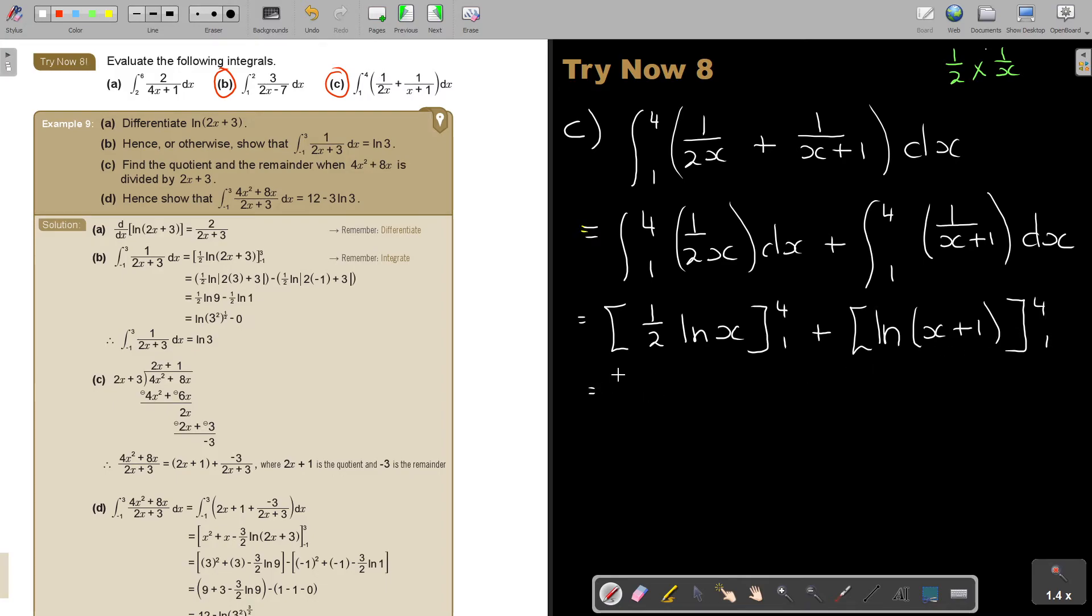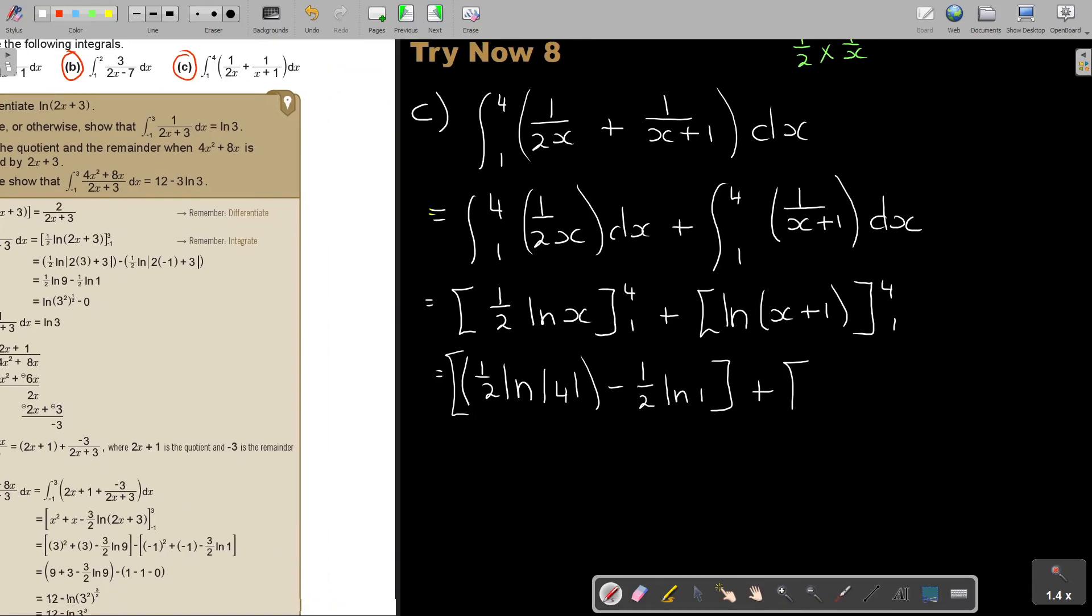And now I'm going to substitute. So now I'm going to say a half ln, and you can put your bars again, 4, so ln 4 minus a half ln 1. Right, that's that part. Let's do this part. Plus ln 4 plus 1, so I can just go 5, minus ln 1 plus 1, and I can just go for 2. And again, I can put my bars, but can you see it's not having an influence?